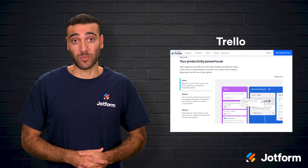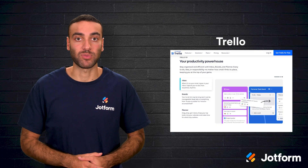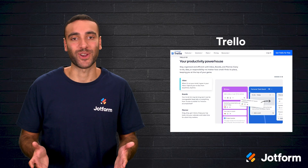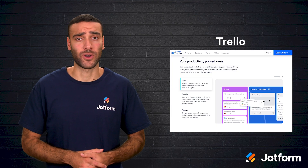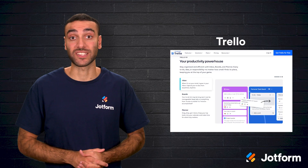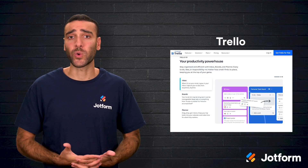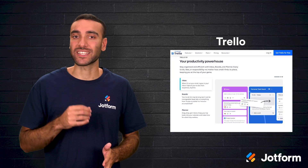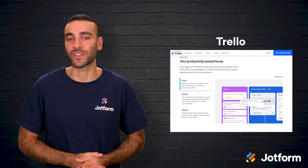Let's start with Trello. If you're a big fan of the Kanban style of project management, Trello is likely right up your alley. Trello focuses heavily on that approach, giving you drag-and-drop Kanban boards that are easy to build and customize. You can quickly move tasks between stages, making it super visual and intuitive to see where everything stands.